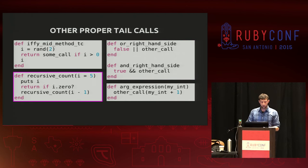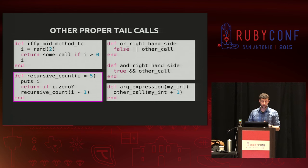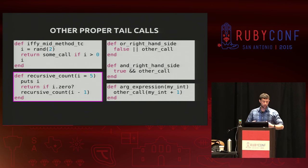The final example, and what gets us into the real power of tail call optimization, is this recursive count call, which recursively keeps calling itself until it gets down to zero — giving you 5, 4, 3, 2, 1, 0. You can really see that recursive_count is the last operation that will happen in this function before it returns.